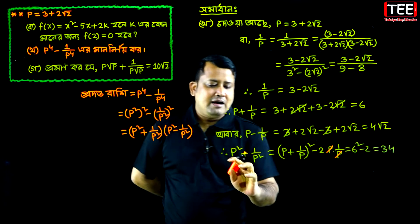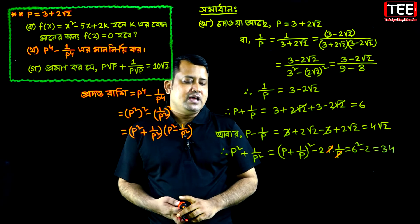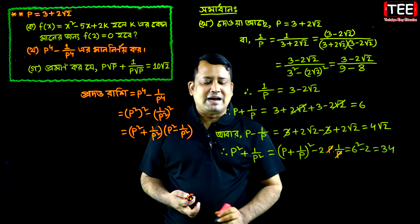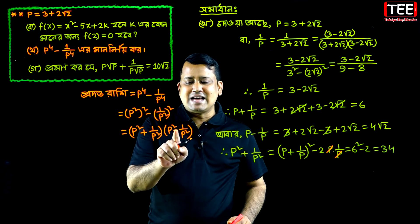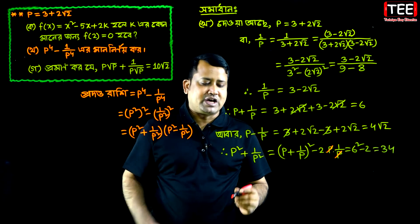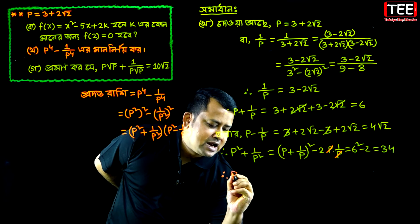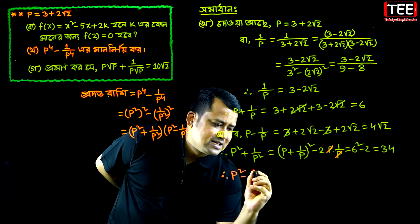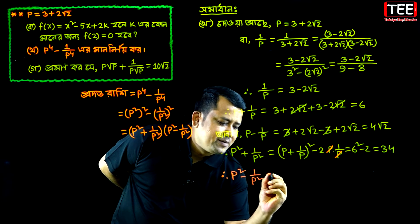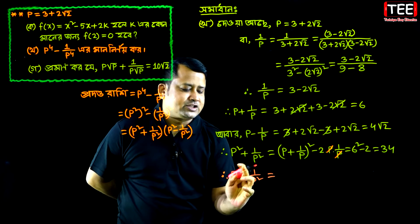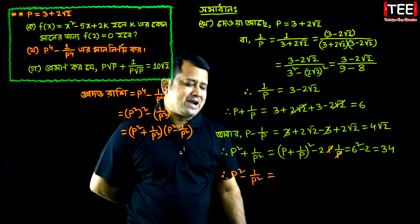P squared plus 1 by p squared equals 34. Now for p squared minus 1 by p squared: using 6, then A squared minus 2 by p squared gives 8.